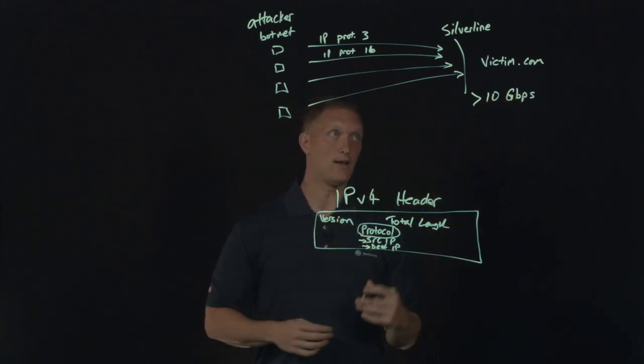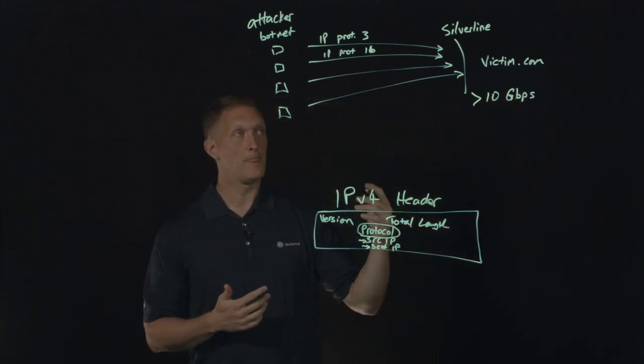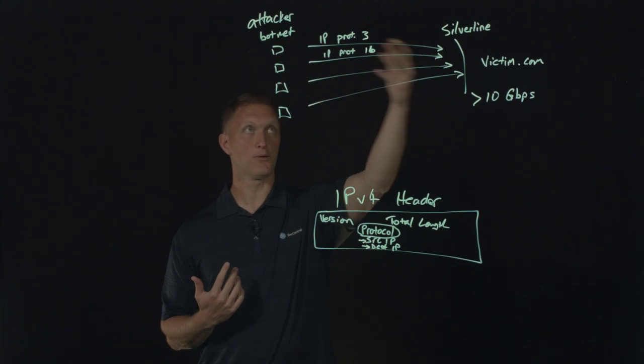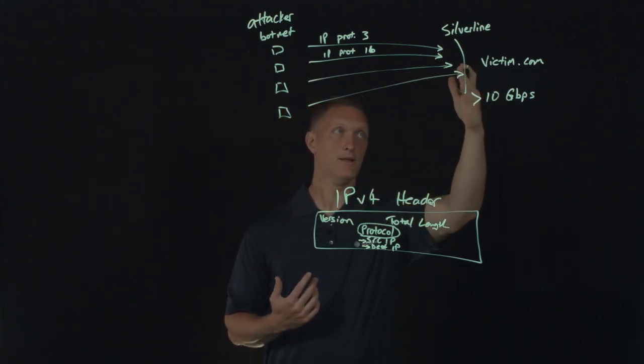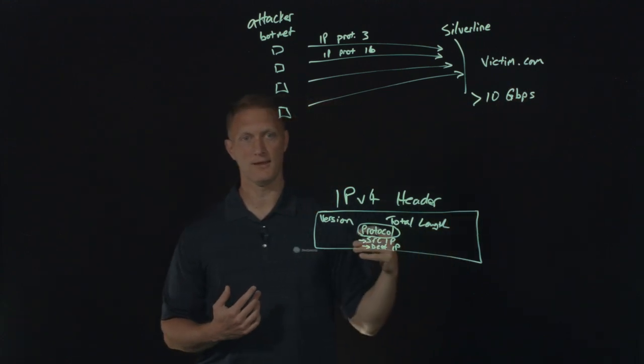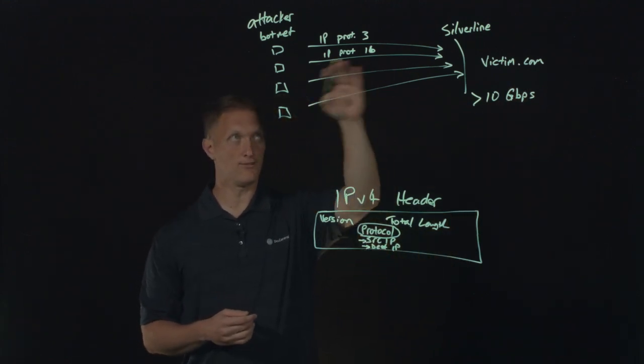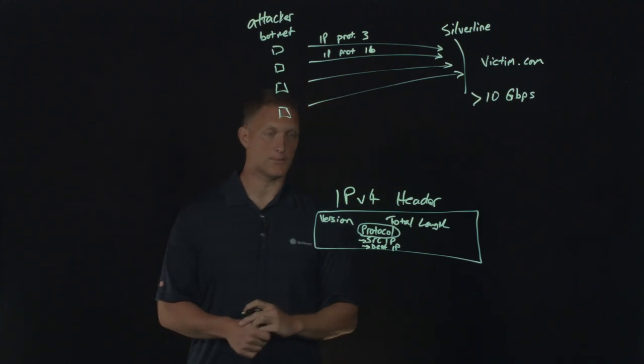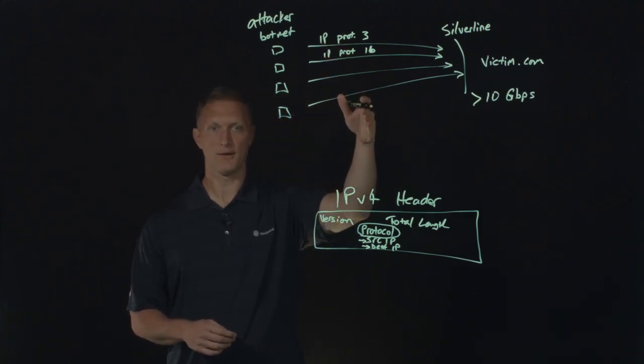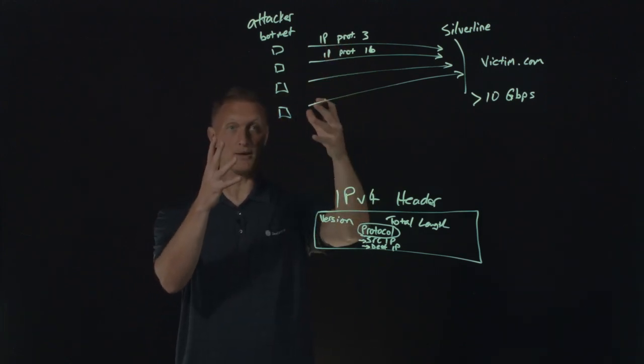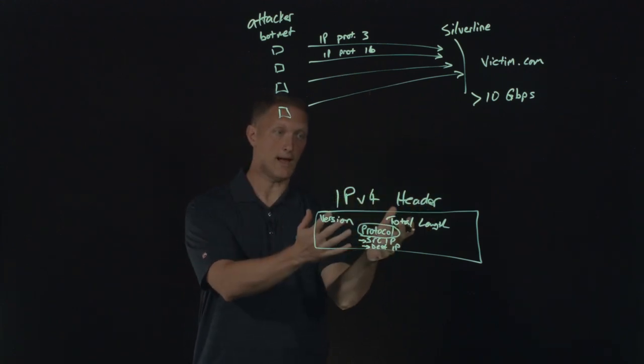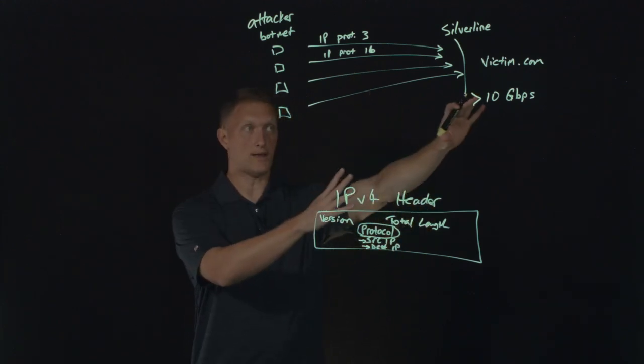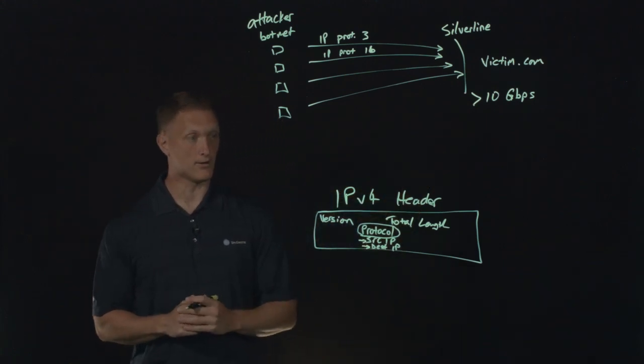And then that just lets the needed protocols through. And frankly, even those protocols, if those protocols are still part of this attack, then there are even more defenses that can come into play on how to block those, even if they have the appropriate protocol in the IP header. But most of these do not have the appropriate protocol. And frankly, that's the point of this attack is to randomize the protocol number in the IP header so that all of these IP packets just flood the victim site.